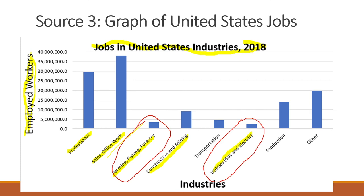What businesses or industries employed more than 15 million workers in 2018? I can look at the numbers on the side and scroll across — here's 15 million. It looks like professional had that many, and sales and office work also had that many. And there's this group called other — maybe these are jobs that just don't fit into any of those categories. Farming, fishing, and forestry look like they have just under 5 million jobs, and construction and mining looks like just under 10 million jobs. Utilities and gas and electric are also under 5 million. Take a few minutes to answer the questions at the bottom of your source document.